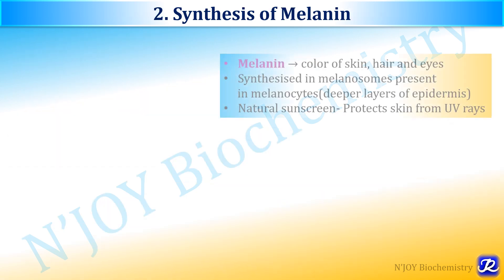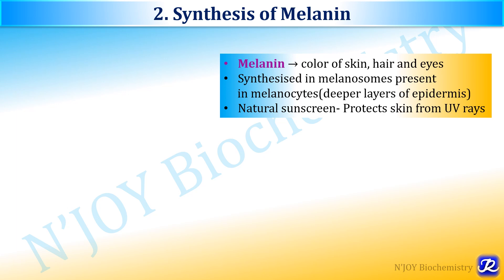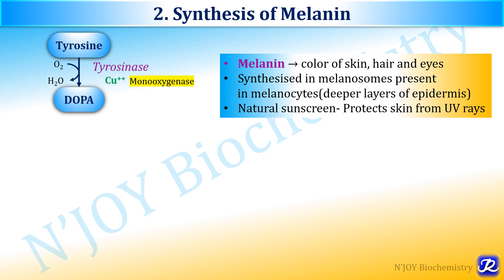Melanin is responsible for the color of skin, hair and eyes. The skin color of an individual is determined by the relative concentration of black and red melanin. Melanin is synthesized in melanosomes present in melanocytes in the deeper layers of the epidermis. It acts as a natural sunscreen protecting skin from ultraviolet rays. The substrate for melanin synthesis is tyrosine. DOPA is formed from tyrosine by the action of enzyme tyrosinase, which is a copper-containing monooxygenase enzyme.